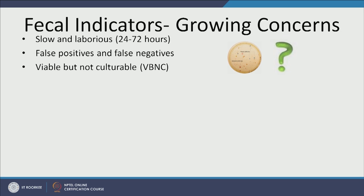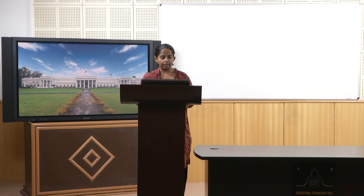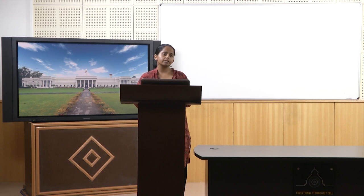There is also a big issue of viable but not culturable organisms. Some E. coli and other indicator organisms are viable — alive and growing — but we cannot culture them in the lab. This has been noted in microbiology for some time: some E. coli will be culturable but some will not be easily cultured. There are many other microorganisms that may be viable but cannot be grown in a lab.